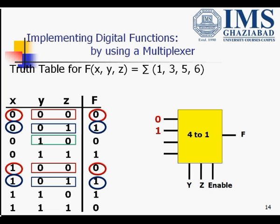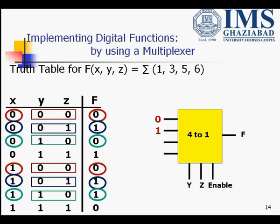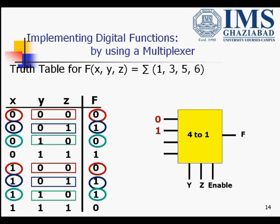In the third case when y,z = 1,0: when x=0 the function value is 0, and when x=1 the function value is 1. That is, the function value depends on the value of x — if x is 0, f is 0; if x is 1, f is 1. Thus our third input variable is equal to x.